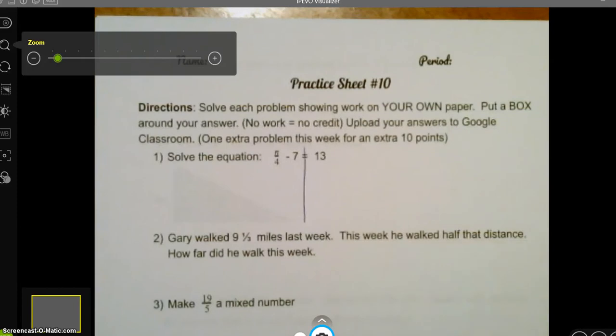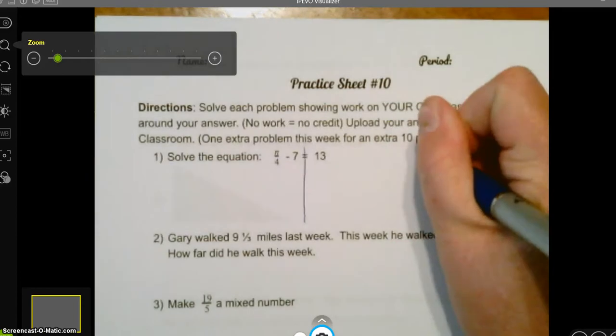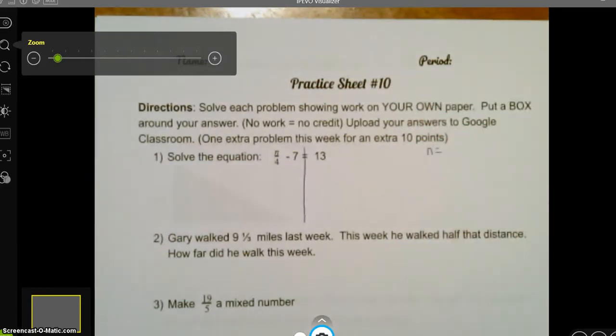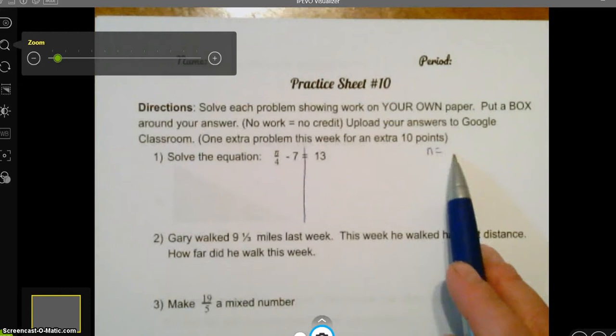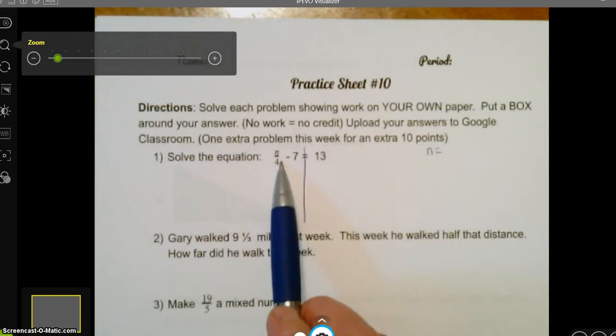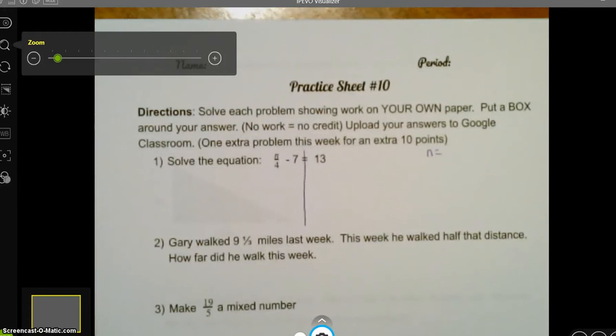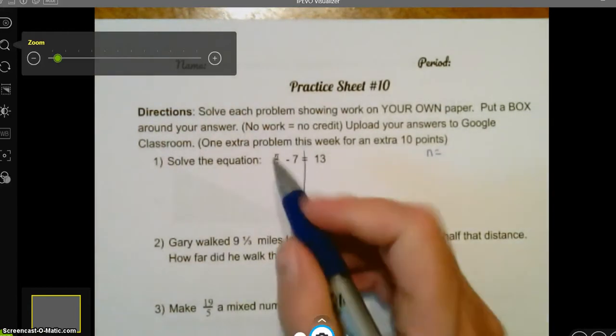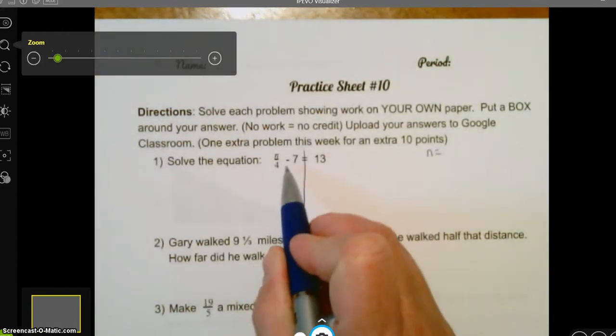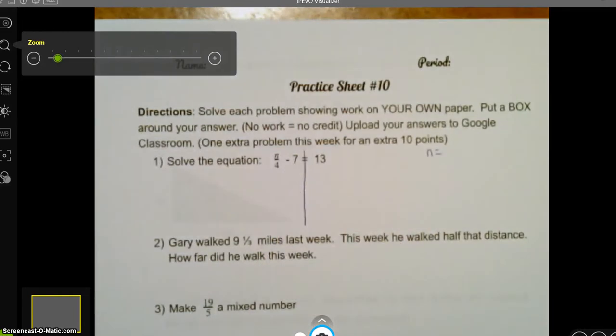So I thought we would go on and start with this together. On number 1, remember your purpose is to get the letter by itself. So in the end, basically I want to get n equals whatever this number equals. That means it is going to make this side equal to this side. If you have been paying attention in class, you know the first step is to get rid of add or subtract if you see it. My variable is on the left. I see a minus next to it, so I want to get rid of minus 7.